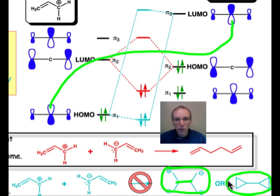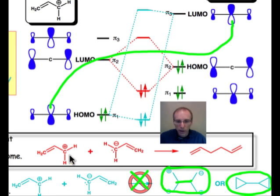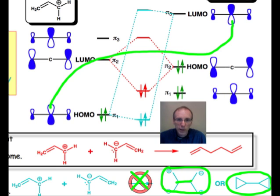This is a simple hypothetical example — we didn't have to go through the FMO analysis to predict that this isn't the observed pathway, since the observed pathway is just what you would expect. Nonetheless, from this example you can see how the FMO analysis is going to work for cases where we wouldn't be able to predict which reaction pathway would be more favorable. We'll see plenty of examples throughout the semester of this sort of analysis.